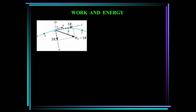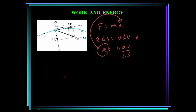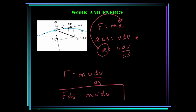So let's talk about the principle of work and energy. If you remember Newton's law, F equals MA, and from chapter 12, kinematics of a particle, the equation A·dS is equal to V·dV. If we solve this equation for A, it's equal to V·dV over dS, and substitute this A into Newton's equation, we come up with F·dS is equal to M·V·dV. This principle is useful for solving problems that involve force, velocity, and displacement.